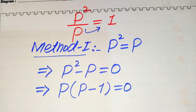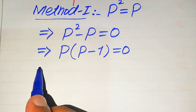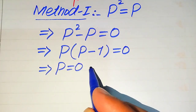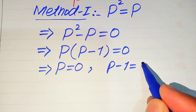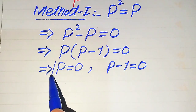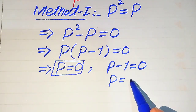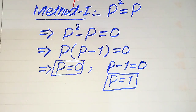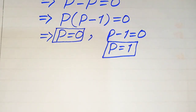We split this into two cases. The first case gives p equals 0, and the second case gives p minus 1 equals 0, so p equals 1. From the first method we get two roots of the given equation: p equals 0 and p equals 1.